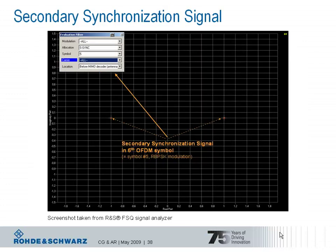Looking at the constellation diagram showing the secondary synchronization signal, we appear to see pure BPSK modulation. In fact, the secondary synchronization signal is represented by an interleaved concatenation of two length-31 binary sequences. These two sequences are scrambled with a scrambling sequence depending on the physical layer identity transmitted with the primary synchronization signal. So without finding the primary synchronization signal, the terminal cannot decode the secondary synchronization signal.